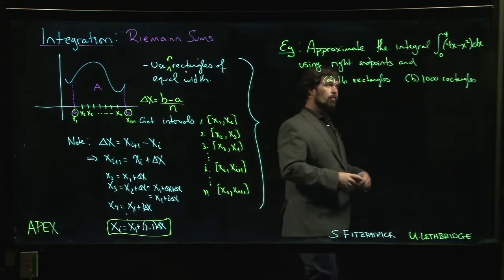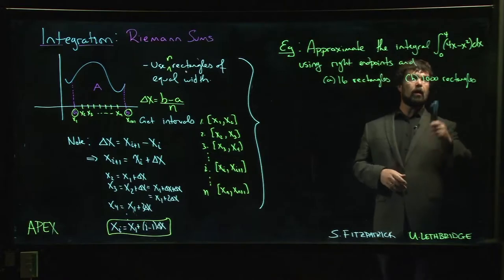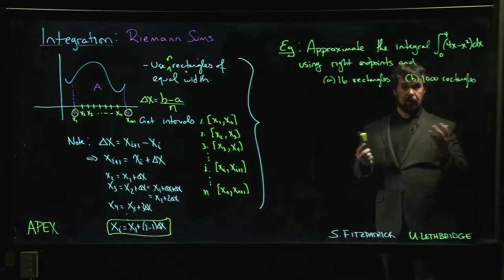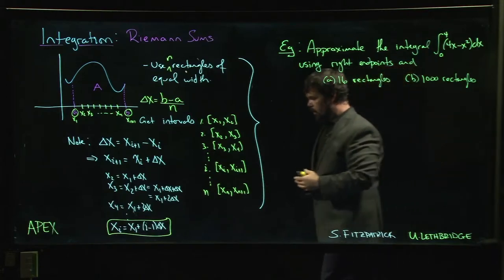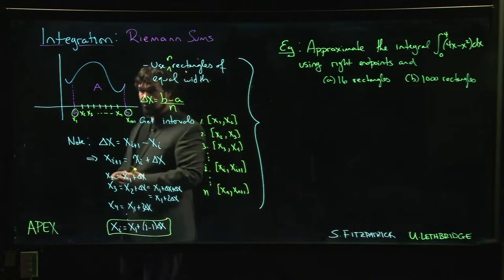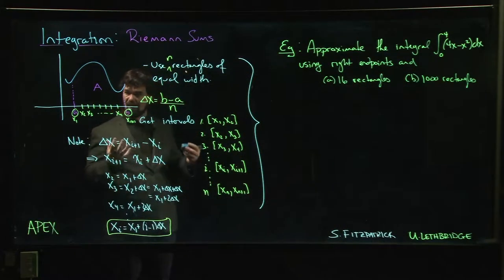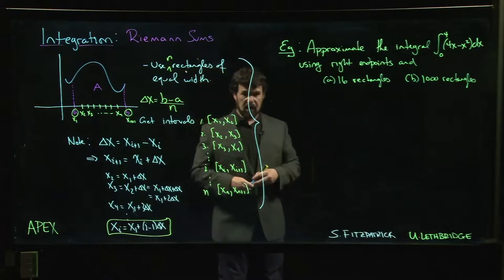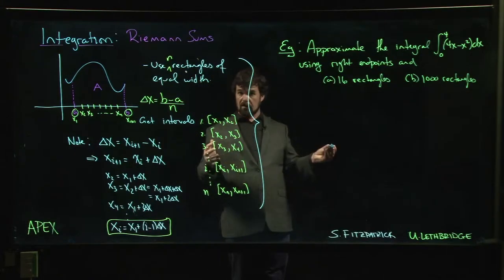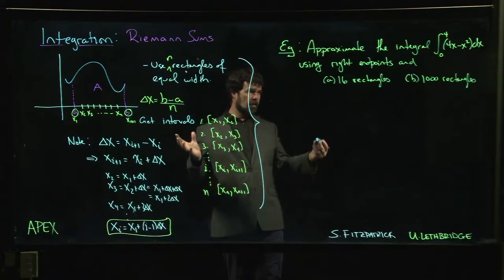We're going to come back to an integral we've looked at a couple of times now, this parabolic arc that we have here. We're trying to find the area underneath it. We tried first with a single rectangle, not a very good approximation, then four rectangles, maybe a little bit better. We have some idea that as we increase the number of rectangles, our approximation should get better.